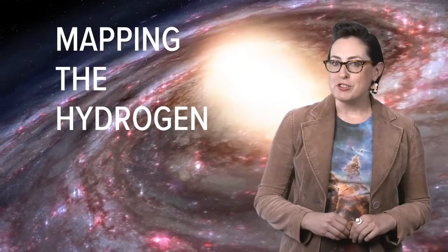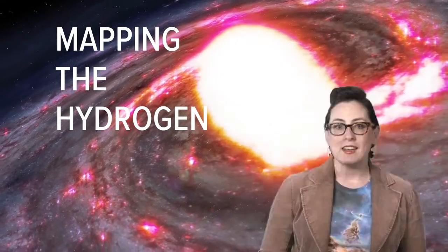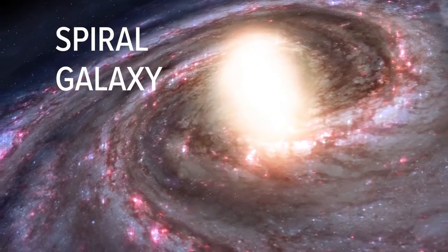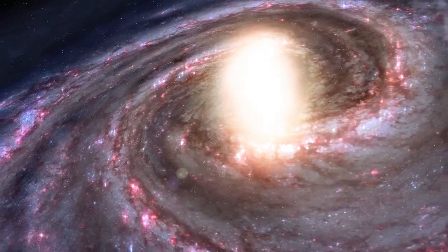For example, mapping the hydrogen in our own galaxy is how astronomers figured out that the Milky Way is a spiral galaxy about 100,000 light years across.